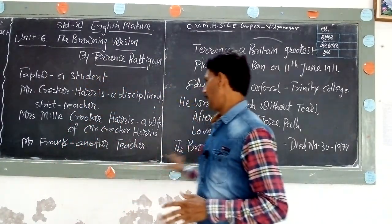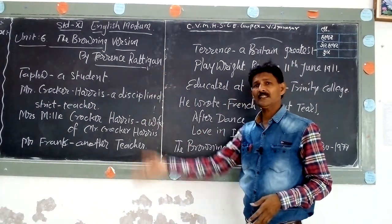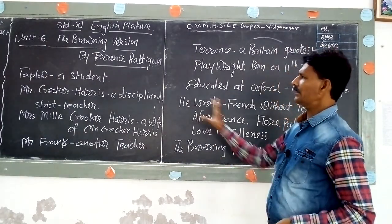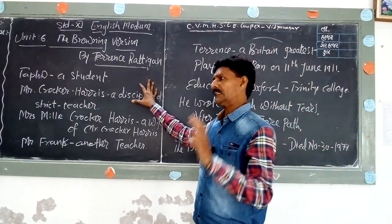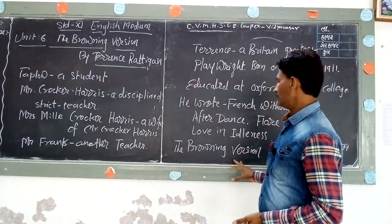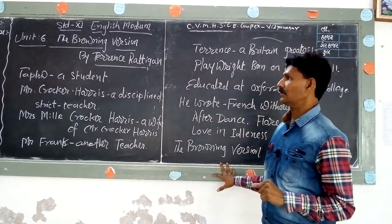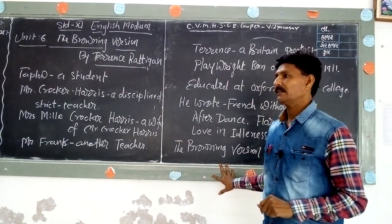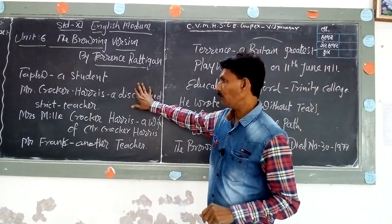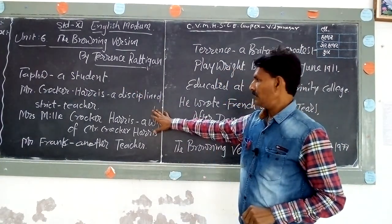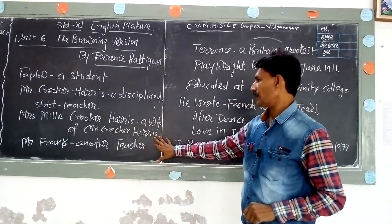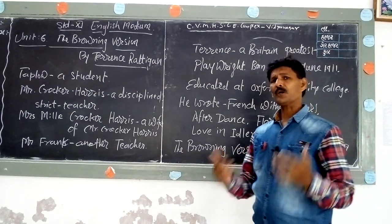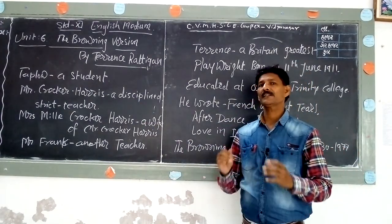This play, The Browning Version, is an extract from the full play. One incident is taken from it. There are four characters: Taplow, Mr. Crocker-Harris, Mrs. Millie Crocker-Harris, and Mr. Frank.